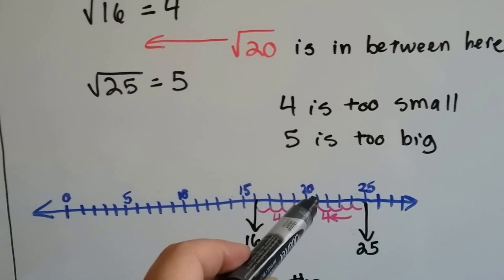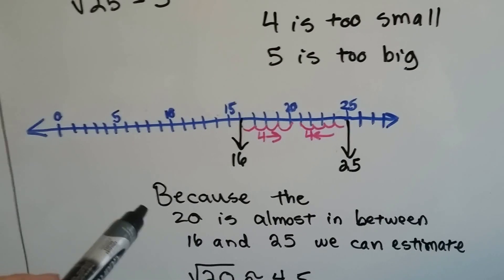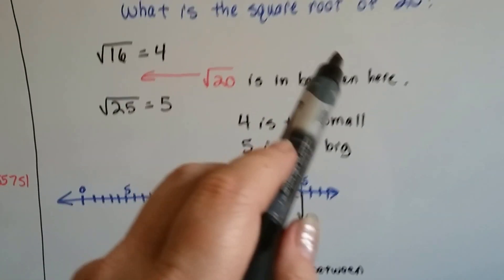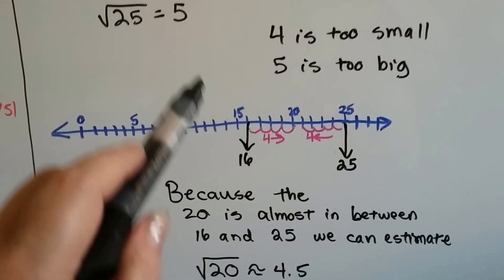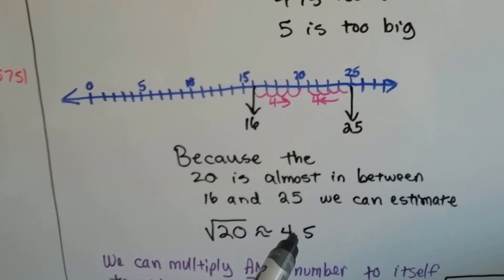it's in the middle of 20 and 21, isn't it? It's like right in the middle there. So because the 20 is almost in between 16 and 25, remember we're trying to find the square root of 20, we can say because 4 is too small and 5 is too big that it's right in the middle at 4 and a half.